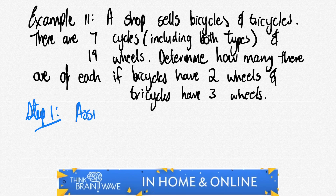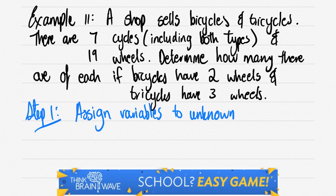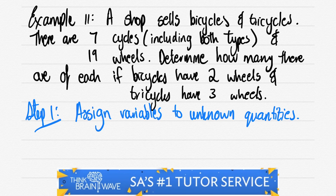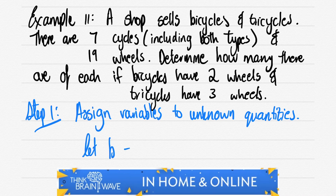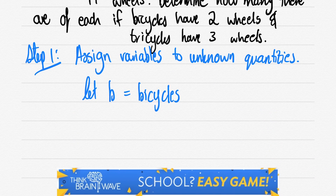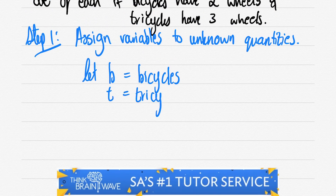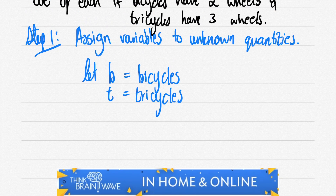Bicycles have two wheels and tricycles have three wheels. It might seem simple, but the wording part can get confusing. So we do step one: assign variables to unknown quantities. We will let b equal bicycles — clearly, since bicycle starts with a b — and t for tricycles, since tricycles starts with a t.